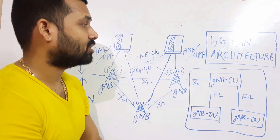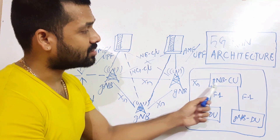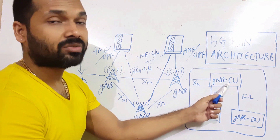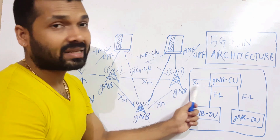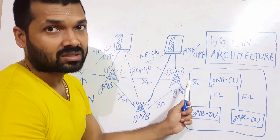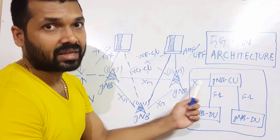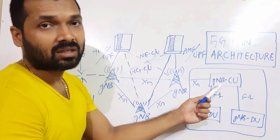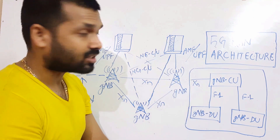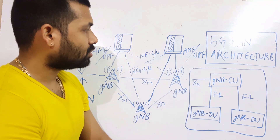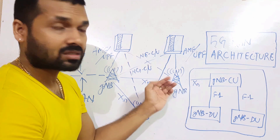One more interface is the XN interface, which connects one gNodeB-CU to another gNodeB-CU. Just like we had the X2 interface in LTE, here in 5G we use the XN interface to connect from one CU to another CU.